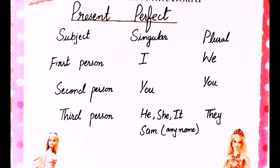Second person singular: you, plural: you. Third person singular: he, she, it, and Sam — Sam ki jagah koi bhi name use kar sakte hain. Plural mein in sab ko they kahenge.